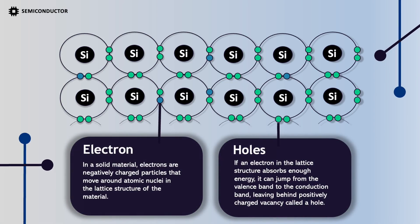Electron: In a solid material, electrons are negatively charged particles that move around atomic nuclei in the lattice structure of a material. Holes: If an electron in the lattice structure absorbs enough energy, it can jump from the valence band to the conduction band, leaving behind a positively charged vacancy called a hole.